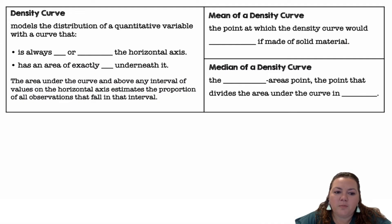A density curve models the distribution of a quantitative variable with a curve that is always on or above the horizontal axis and has an area of exactly 1 underneath it. The area under the curve and above any interval of values on the horizontal axis estimates the proportion of all observations that fall in that interval.